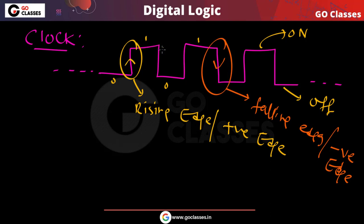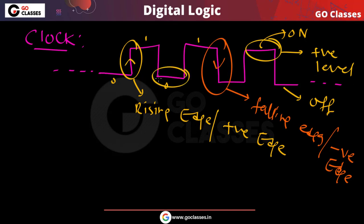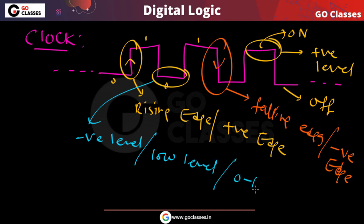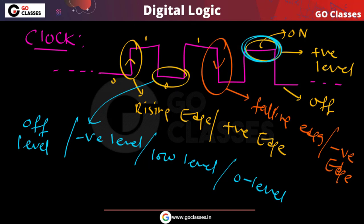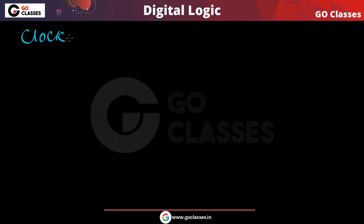This is the positive or high level, and this is the negative or low level — you can also call it the zero level or off level. The on level is also called the positive level or high level. The falling edge is so named because the clock is going from one to zero, and the rising edge is so named because the clock is going from zero to one. So in a clock, we have these types of things.